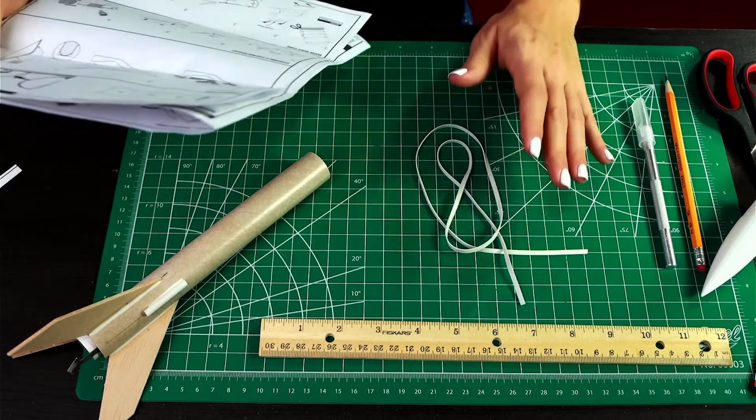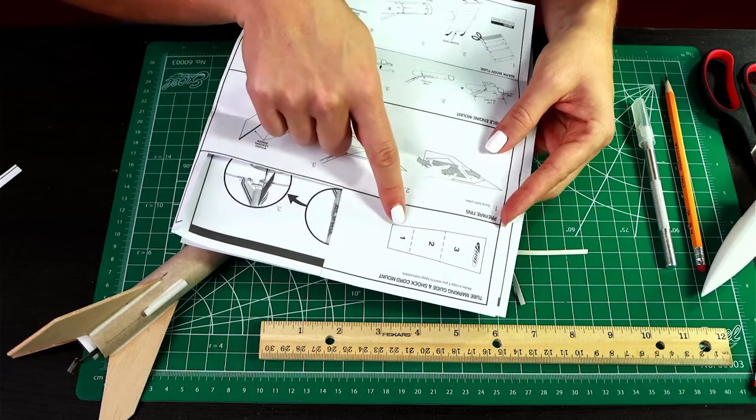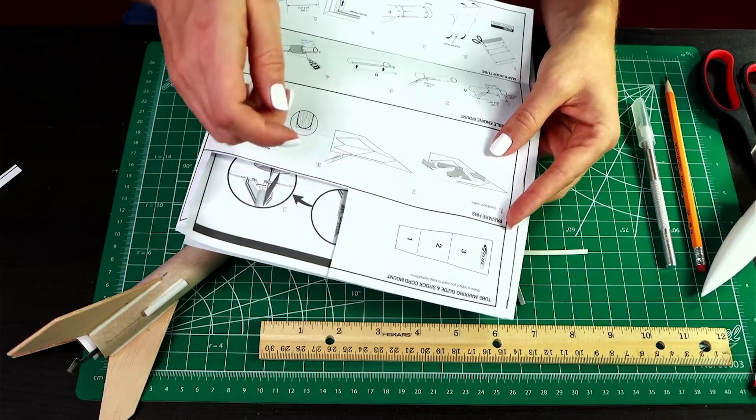Okay, so then we want to install the shock cord. To do that, again you'll need your instructions and you'll need to cut out this little shock cord mount from the instructions.